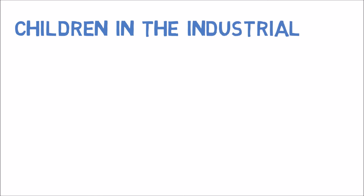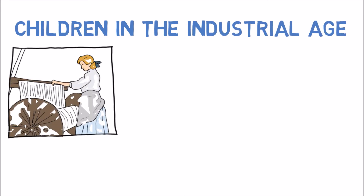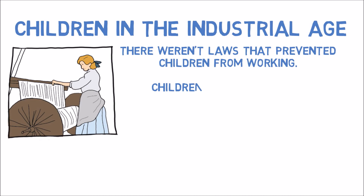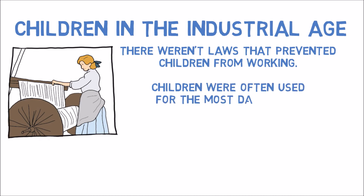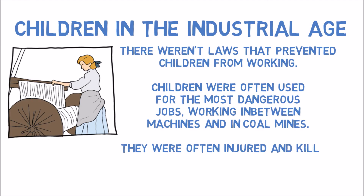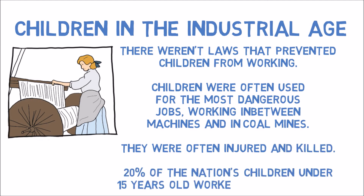Children in the Industrial Age. There weren't laws that prevented children from working. Children were often used for the most dangerous jobs, working in between machines and in coal mines. They were often injured and killed. 20% of the nation's children under 15 years old were working in the factories.